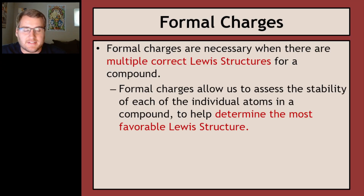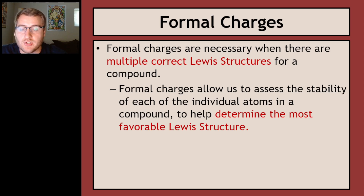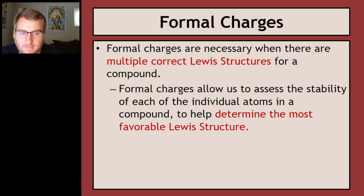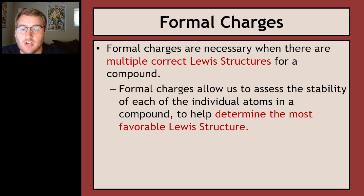Formal charges are necessary when there are multiple correct Lewis structures for a compound. Any time you can draw multiple options, you can use formal charges to figure out which one is right. Formal charges allow us to assess the stability of each individual atom in a compound to help determine the most favorable Lewis structure — meaning the lowest in energy, with no unnecessary charges, the most stable and least likely to break apart.